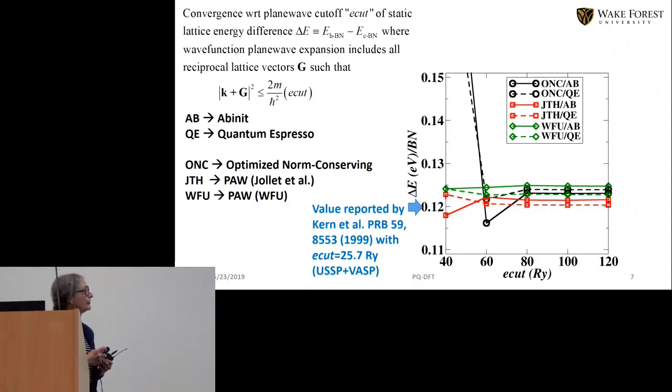So what we did was to make a convergence study with these three different pseudopotential data sets: the norm conserving in black, the JTH set in red, and ours in green. The full line represents Avinet and the dashed line represents quantum expresso and what's interesting to us is that between Avinet and quantum expresso the convergence properties are quite different.